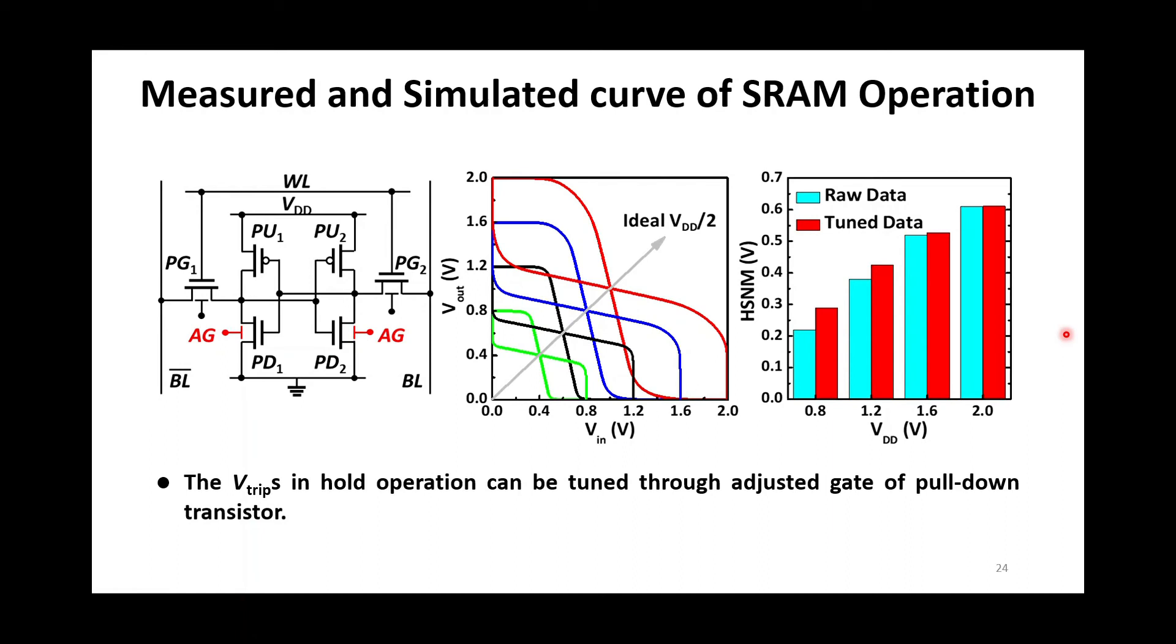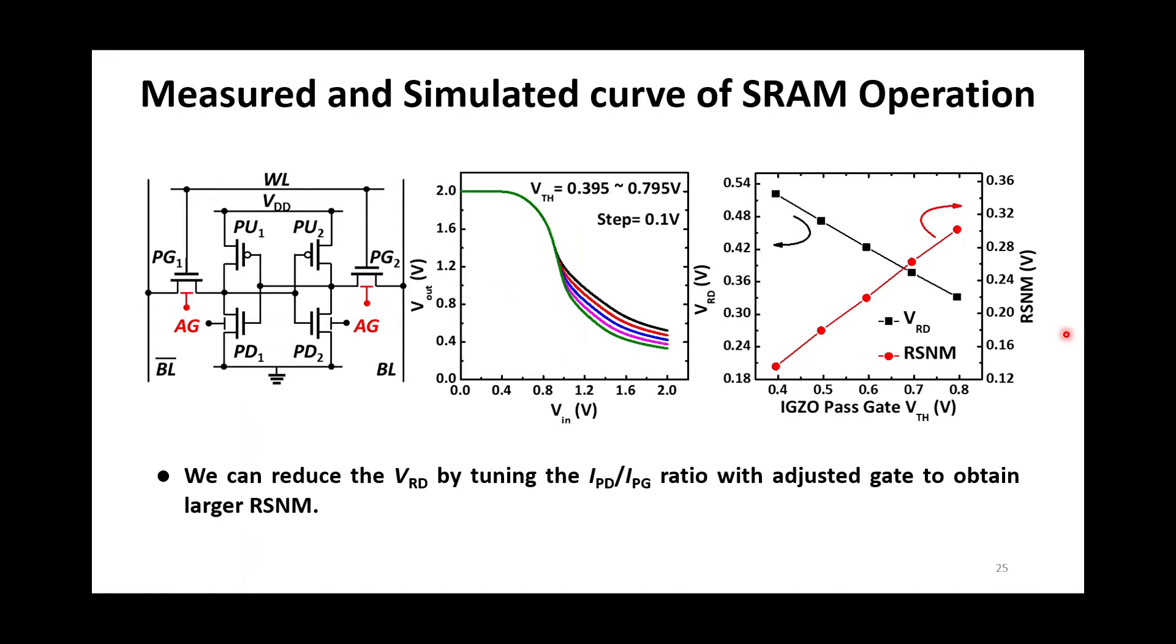We can further introduce the adjusted gate into access transistor to optimize SRAM read operation. By tuning threshold voltage of pull-down and access transistor, their drive current ratio is changed, leading to the lower read-disturb voltage. The right figure plots the read-disturb voltage and read-noise margin with different adjusted gate voltage of pass gate. The higher threshold voltage pass gate has, the lower read-disturb voltage and better read-noise margin we obtain.